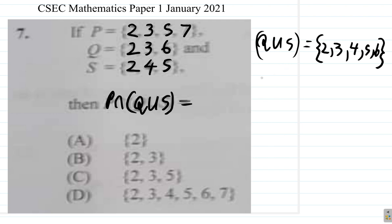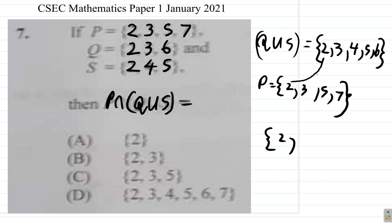Now, what is P intersect that? P has 2, 3, 5, 7. The intersection is what occurs in both at the same time. 2 is in P and 2 is in Q union S, so you have 2. 3 is also in both of them, so you have 3. I see 5 here, and I see 5 here — 5 is in both, so there is 5. There is no 7 up here. I see 4 up here, but none in P. I see 6 up here, but none in P. So what we have is 2, 3, 5.